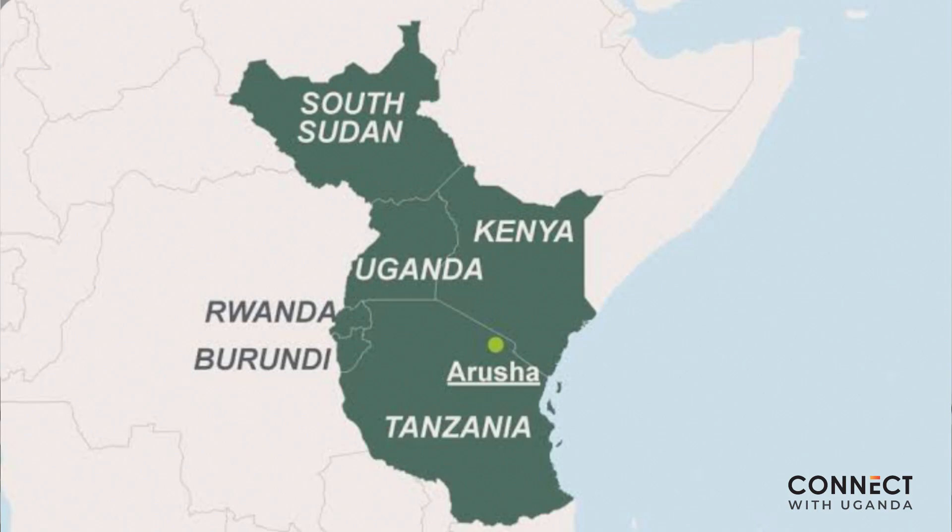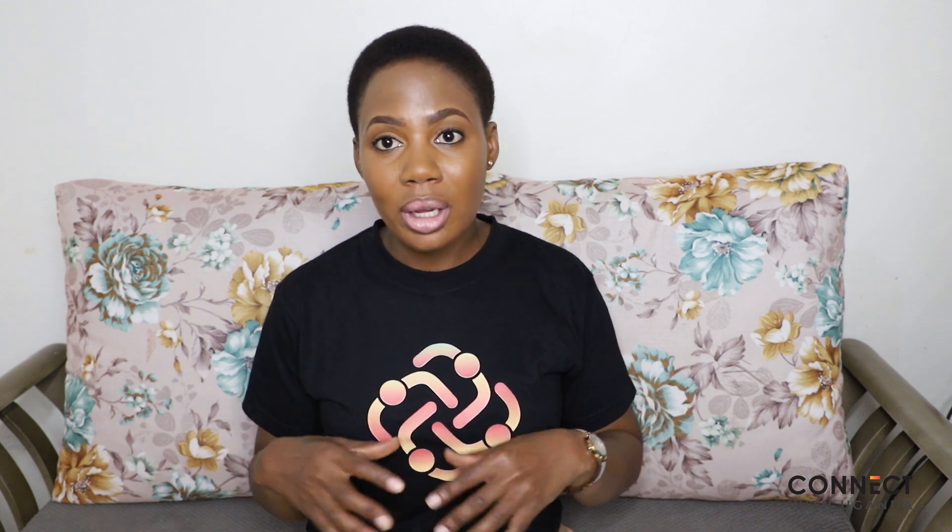The first category of these countries are countries within the East African Community. The East African Community is an organization that brings together all six countries within Eastern Africa to create a free trade area where they can trade amongst themselves without any restrictions. So nationals of Tanzania, Rwanda, Kenya, and Burundi do not require a visa when they're traveling to Uganda.